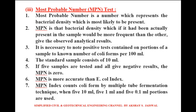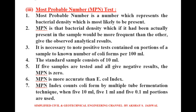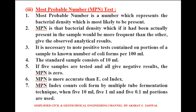Now we will see the most probable number (MPN) test. MPN is a number which represents the bacterial density most likely to be present. MPN is the bacterial density which, if actually present in the sample, would be more frequent than any other. It is necessary to note positive tests based on portions of a sample to determine number of coliforms per 100 ml. The standard sample consists of 10 ml. If 5 samples are tested and all give negative results, MPN is 0. MPN is more accurate than E.coli index. MPN index counts coliforms by the multiple tube fermentation technique when 5×10 ml, 5×1 ml, and 5×0.1 ml portions are used.